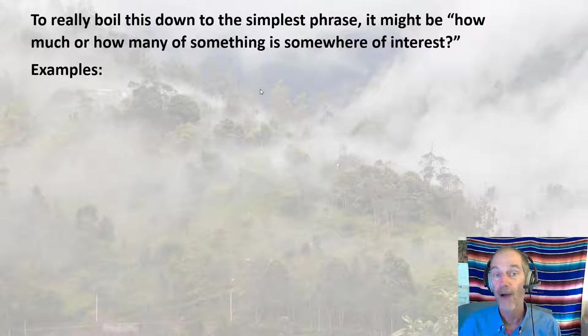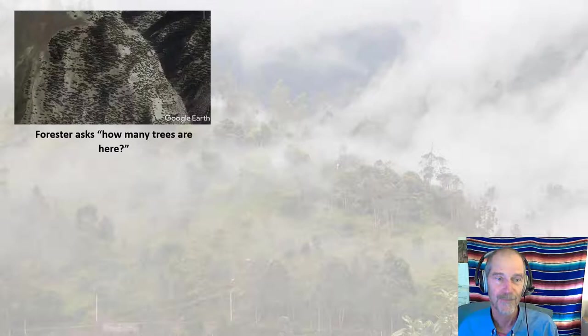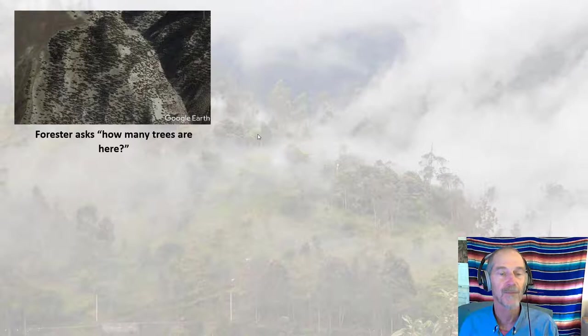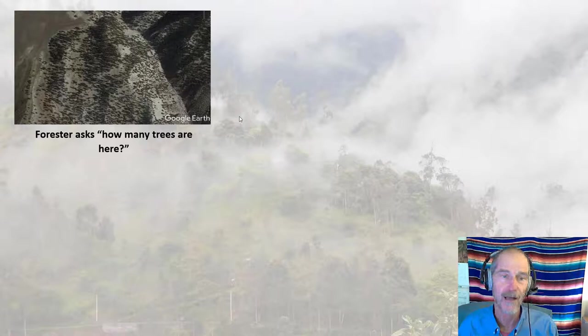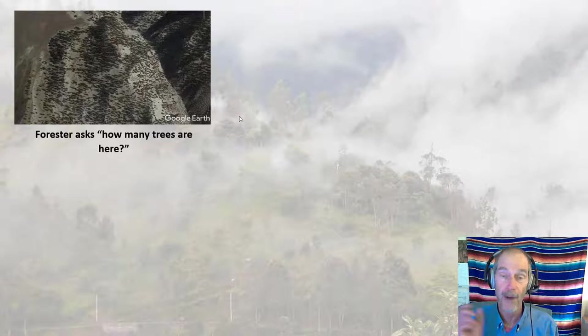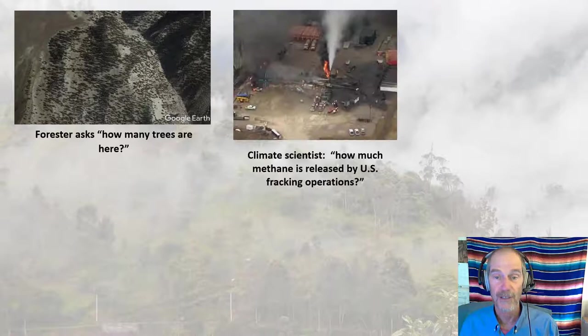I like to boil this down to the simplest phrase: how much or how many of something is somewhere of interest. A forester might ask how many trees are here — shown is a picture in the White Mountains of California where each dot is a bristlecone pine. If it were a market-based lumber like Douglas fir or redwood and you wanted to harvest, you'd want a population estimate of trees on your property. Alternatively, a climate scientist might ask how much methane is released by US fracking operations — sensors around fracking sites could measure gas concentration.